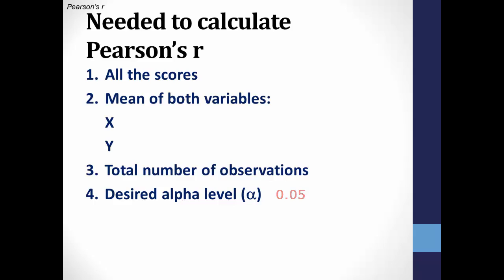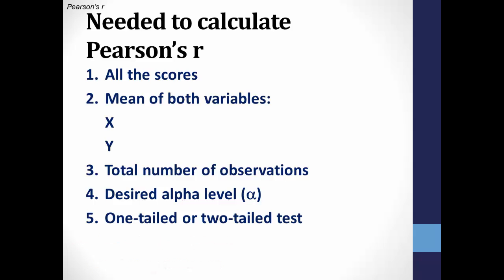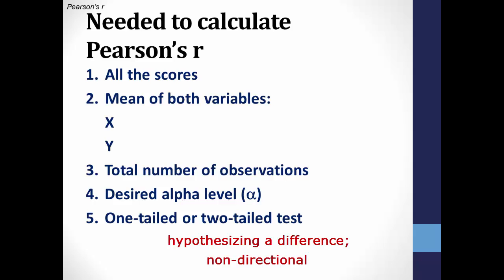You'll need to determine if your hypothesis necessitates a one-tailed or a two-tailed test. A one-tailed test is when we hypothesize that the difference between the two scores is directional, and a two-tailed test is when we are merely testing to see if there is a difference — or in this case, a correlation — without specifying which direction the correlation will be. It is non-directional.